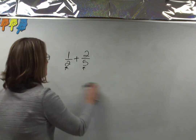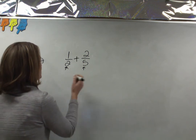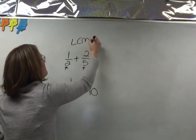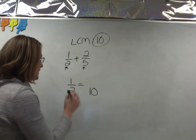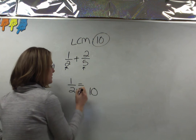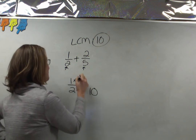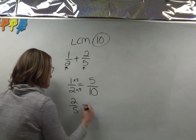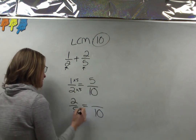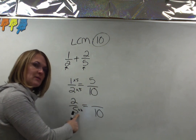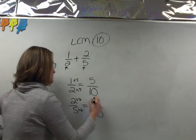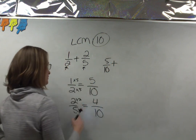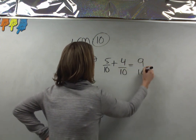I have to change both one-half and two-fifths so they share a denominator of ten. One-half: two times what is ten? Two times five is ten, so multiply the top and bottom by five — one-half becomes five-tenths. Two-fifths: five times what equals ten? Five times two equals ten, so multiply the top and bottom by two — two times two equals four, so two-fifths becomes four-tenths. Five-tenths plus four-tenths equals nine-tenths, which is almost a whole.